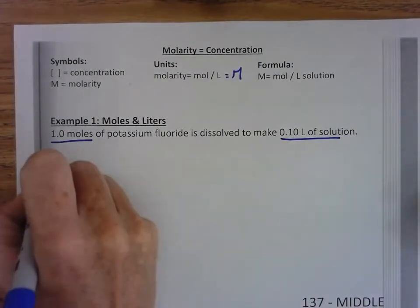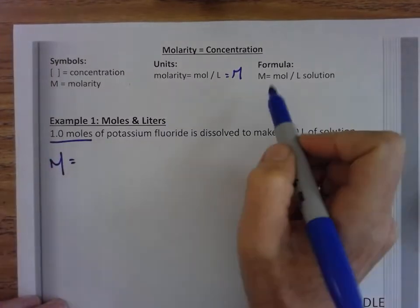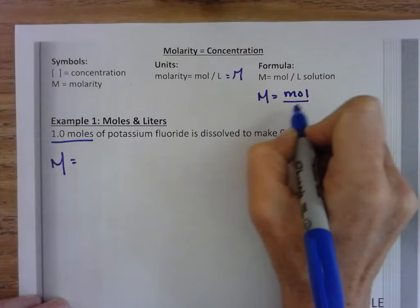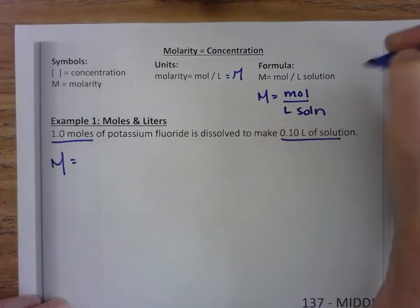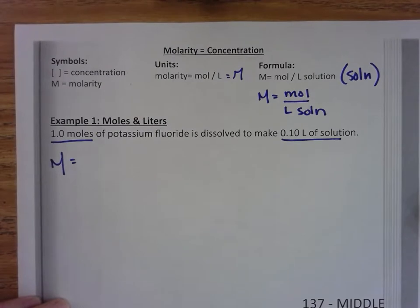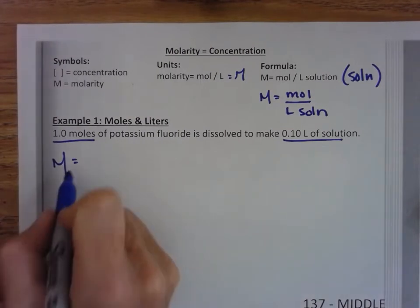So for molarity, it might be easier for you to have it written like this. The S-O-L-N is used a lot for solution. So these are the three variables we need.